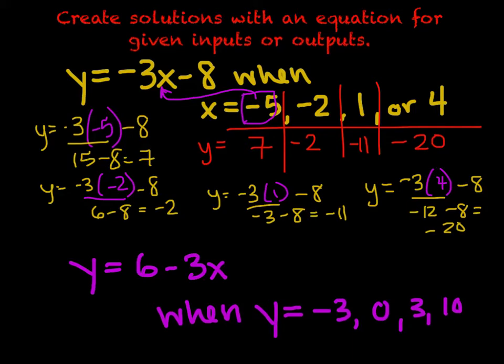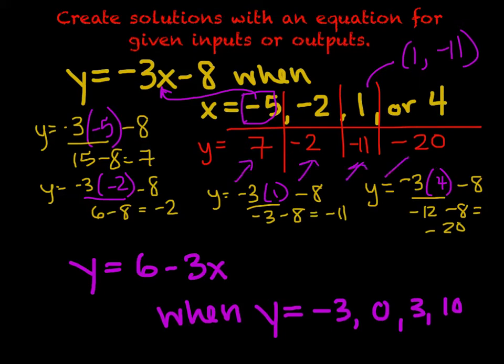That is how we find solutions for an equation with the given inputs. These results are coordinate pairs — for example, (1, -11). We could plot each of these points on a graph, and we would slowly start to see a linear equation forming. Plotting all four points — (-5, 7), (-2, -2), (1, -11), and (4, -20) — should reveal a linear equation.